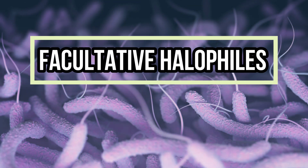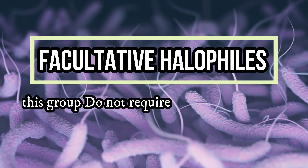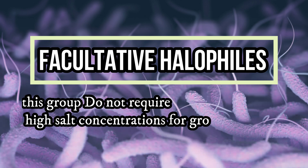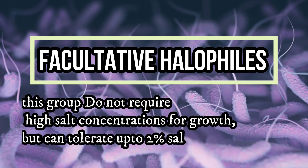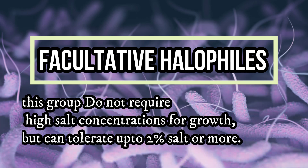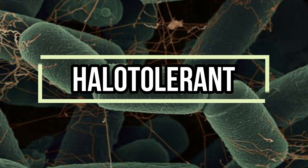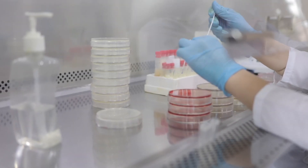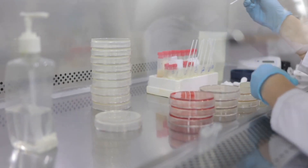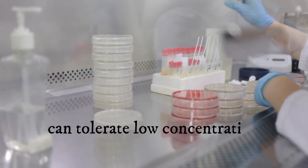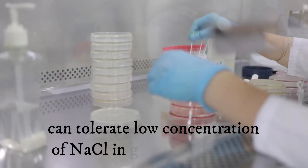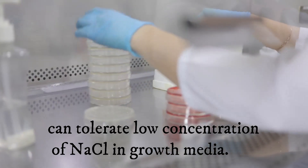3. Facultative halophiles: this group does not require high salt concentrations for growth, but can tolerate up to 2% salt or more. 4. Halo tolerant: most of these bacteria do not require sodium chloride, but can tolerate low concentrations of sodium chloride in growth media. This kind of bacteria are called halotolerant.